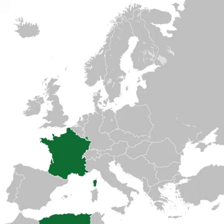France adopted the Constitution of the Fourth Republic on 13 October 1946. Despite the political dysfunction, the Fourth Republic saw an era of great economic growth in France and the rebuilding of the nation's social institutions and industry after World War II. It also saw the beginning of German-French cooperation, that later led to the development of the EC and the EU.